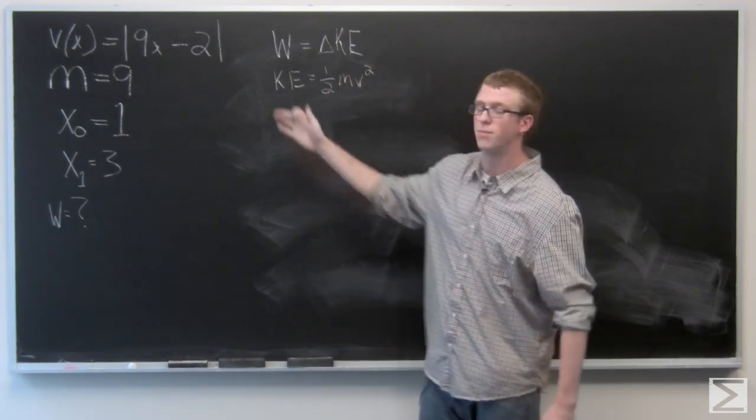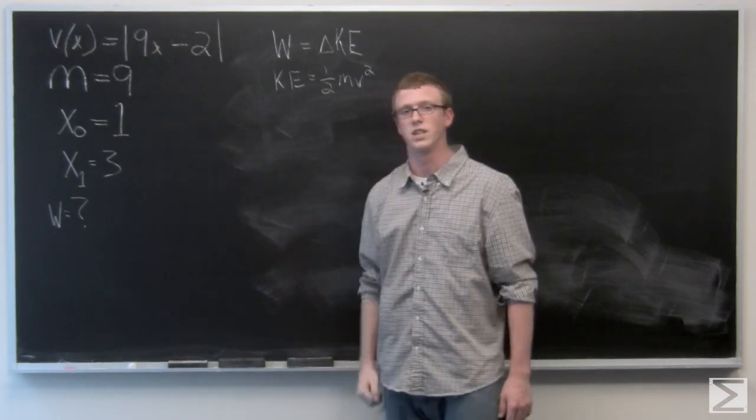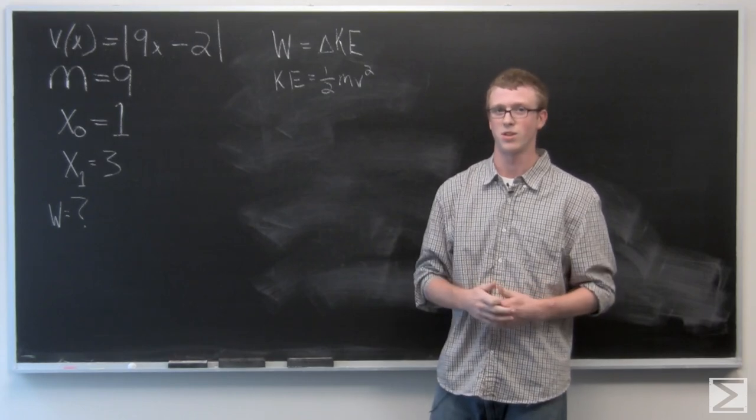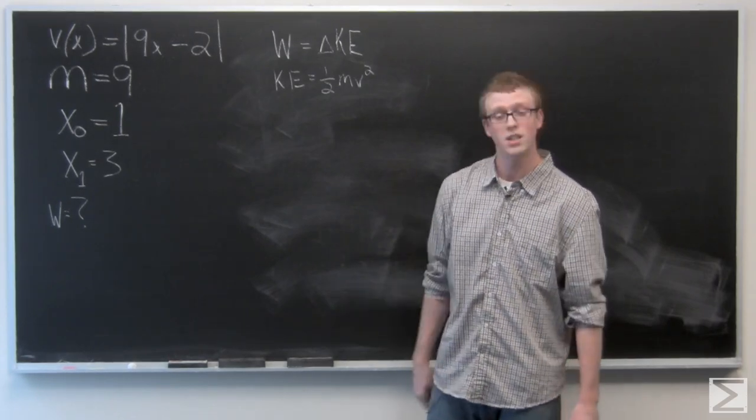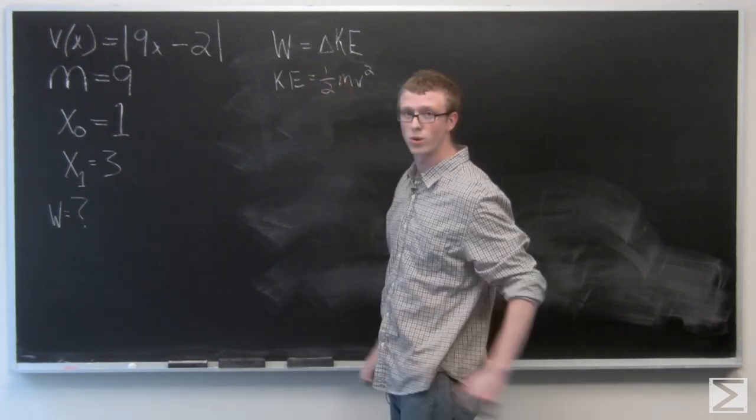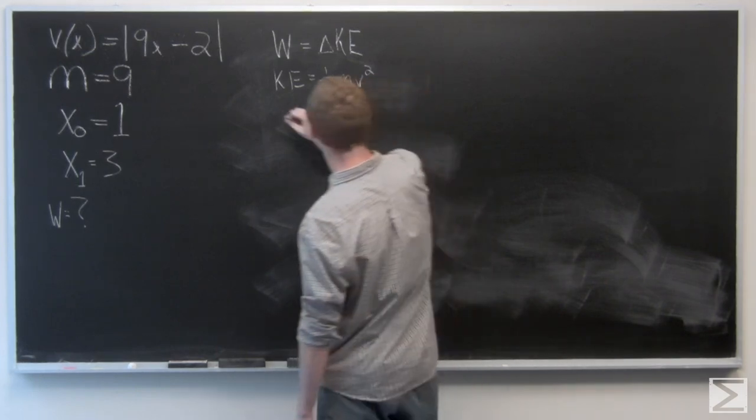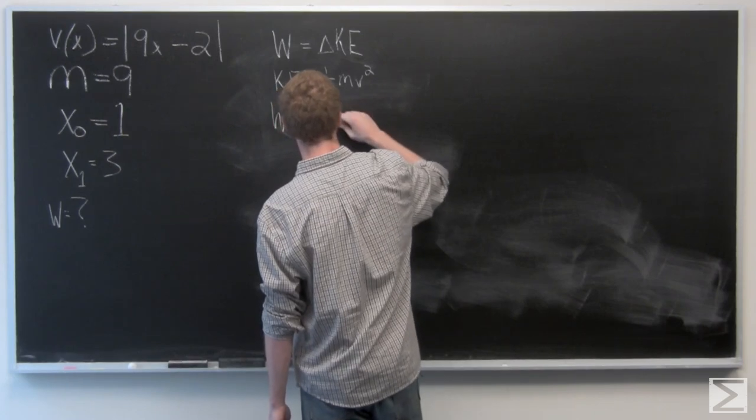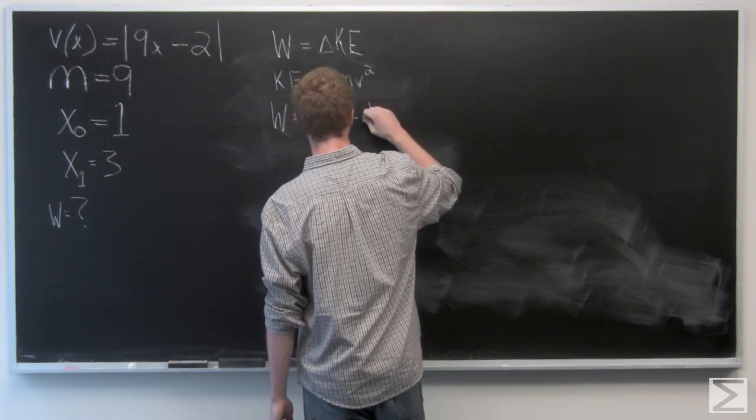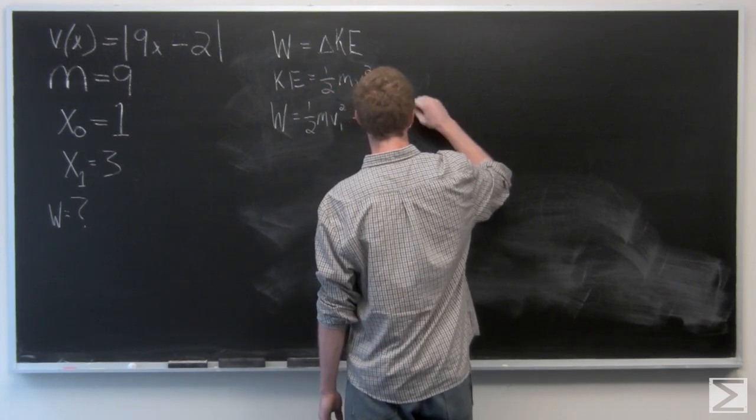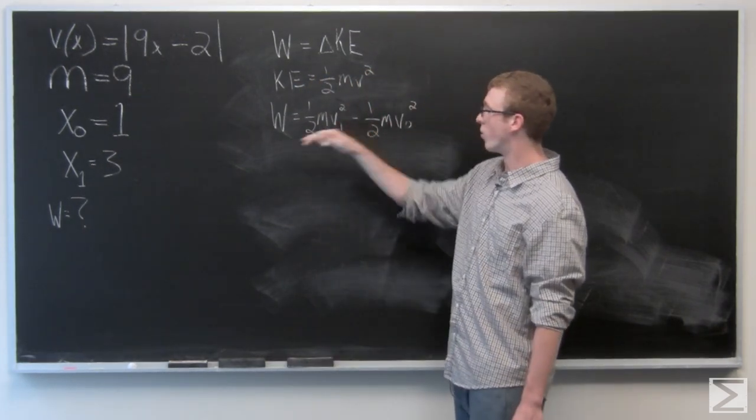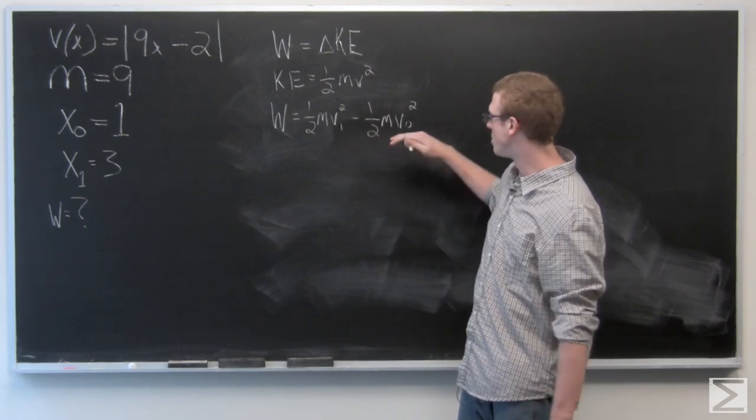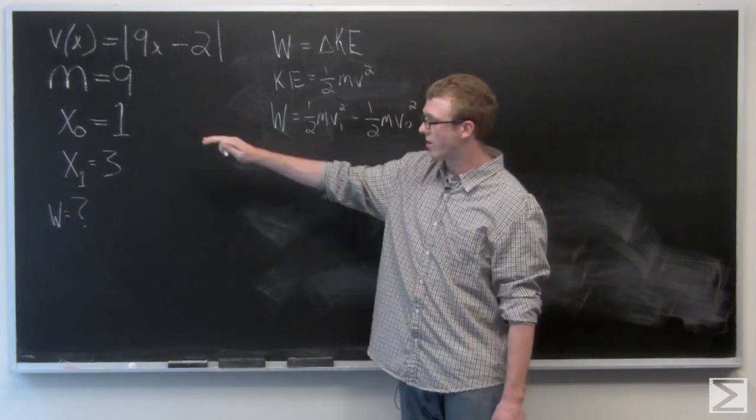Since we're given the function for velocity and also the initial positions, we can actually calculate this change in kinetic energy and don't have to do any derivations to figure out what the work done is. So we're just going to redefine this work equation in terms of mass and velocity. We have work is 1/2 mv1² minus 1/2 mv0². v1 and v0 will both be found using x1 and x0.